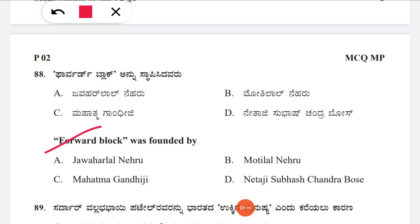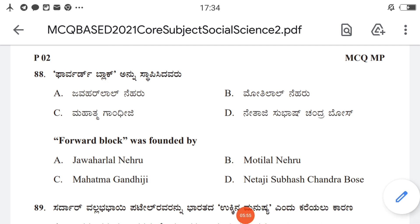Question 88: The Forward Bloc was founded by whom? It was a political party. Options: A: Jawaharlal Nehru, B: Motilal Nehru, C: Mahatma Gandhi, D: Netaji Subhash Chandra Bose. The correct answer is D, Netaji Subhash Chandra Bose. The same question was also asked in the first model question paper.